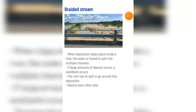Braided stream: when deposition takes place inside a river, the water is forced to split into multiple channels. If a large amount of deposition occurs, a sand bank is created and the river has to split up to go around the deposition. These streams later rejoin each other after the deposition to continue as the river.